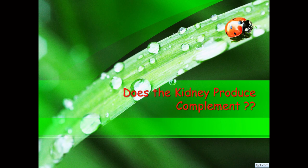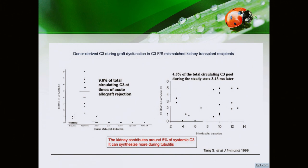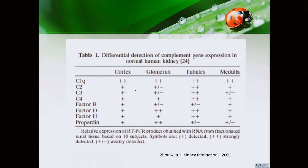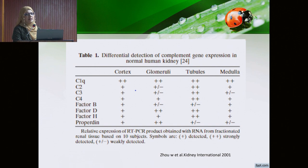Now the question comes: does the kidney produce complement? Traditionally we know that complements are produced in the liver, but the kidney also produces them. A study done in kidney transplant recipients found that donor-derived C3 was around 10% of total circulating C3 during acute allograft rejection, and around 5% during a quiescent period. Therefore, the kidney contributes around 5% of systemic C3 and can synthesize more during tubulitis. Research also shows that the kidney can produce sufficient amounts of complement components.